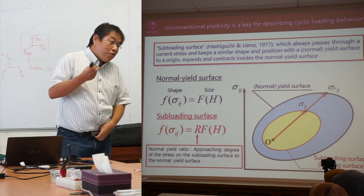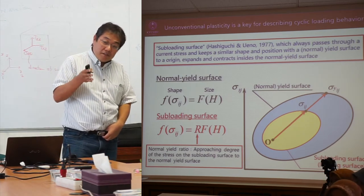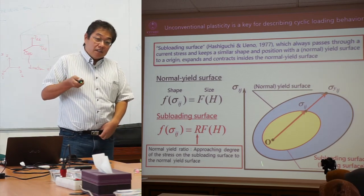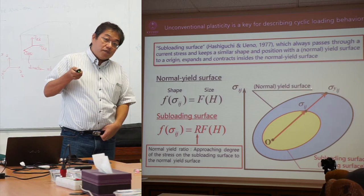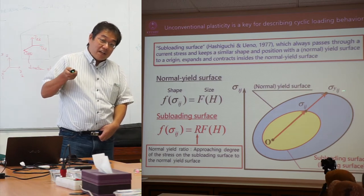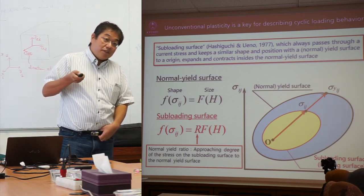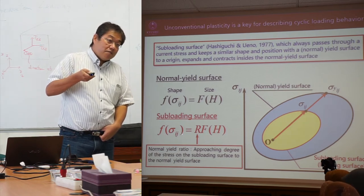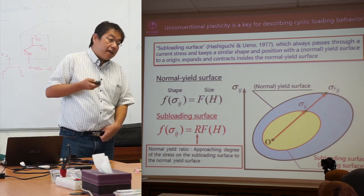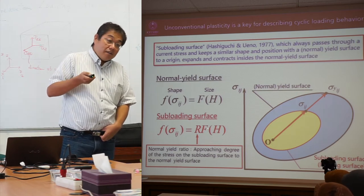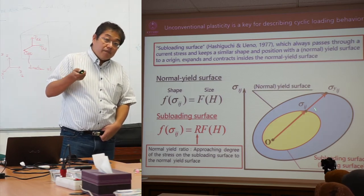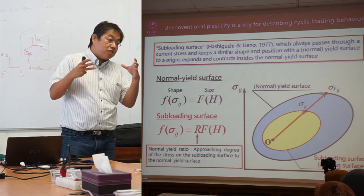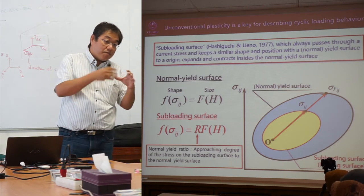Plastic deformation — this is very important. Plastic deformation is described by the ratio of the sub-loading surface to the yield surface. The definition of r is: r equals f(sigma_ij) divided by capital F. When r equals 1, the two surfaces are the same size.